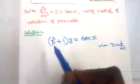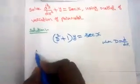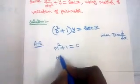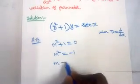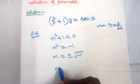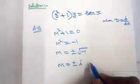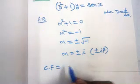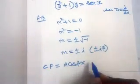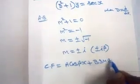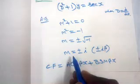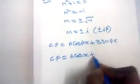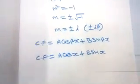In the method of variation of parameters, the complementary function is found by the usual method. The auxiliary equation is m² + 1 = 0, so m² = −1, giving m = ±i. This is of the form α ± iβ with α = 0 and β = 1, so the complementary function is A·cos(x) + B·sin(x).